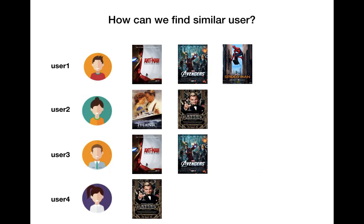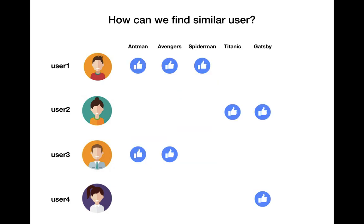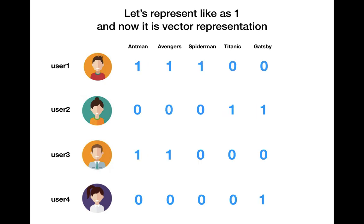As data scientists, how can we find a similar user? All we have is like button information, so we can represent the like button as 1, and if a user has not clicked the like button, we say 0. This gives us a user-to-movie matrix where every user has a vector of 1s and 0s. For example, user 1 is 1, 1, 1, 0, 0 and user 2 is 0, 0, 0, 1, 1 — a 5-dimensional vector.